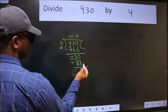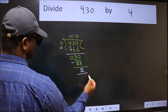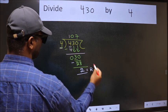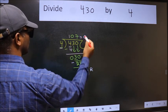No more numbers to bring down. So we stop here. This is our remainder and this is our quotient.